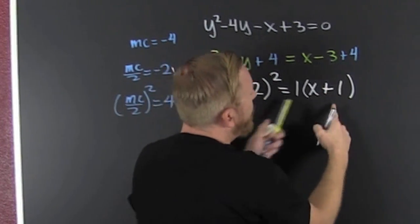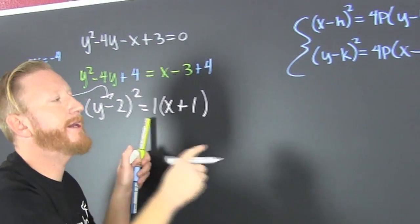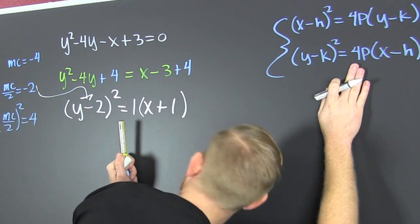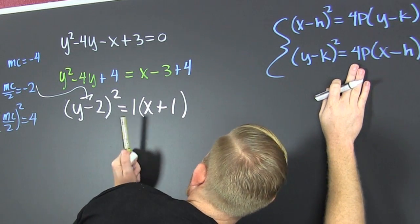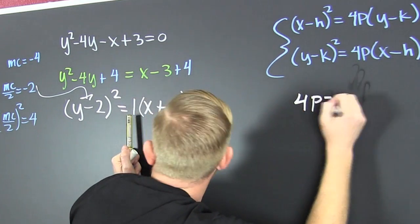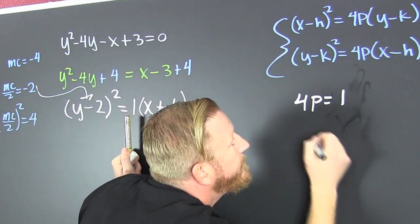Now, since we're trying to get in a preferred form, I factored out a 1. I didn't really, there's just a 1 on the front. And that's this guy. So now I'm trying to find my p.